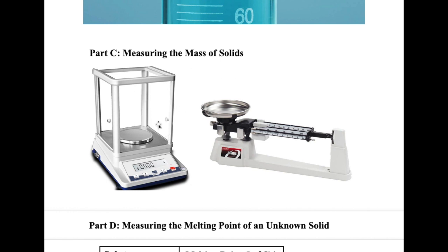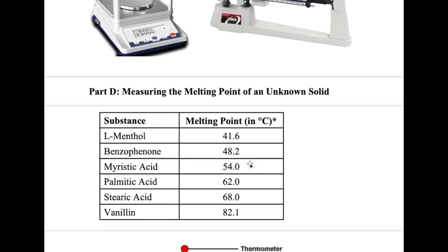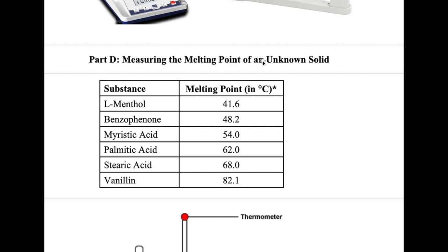In part C, you'll measure the mass of solids using two instruments. The digital balance is straightforward — place your object on it and read the displayed number. The second instrument is a triple beam balance, where you need to adjust levers to get the correct mass. There is a short two-to-three minute video on the lab page walking you through how to read a triple beam balance.